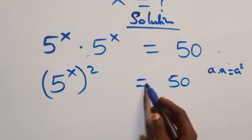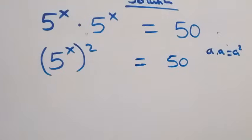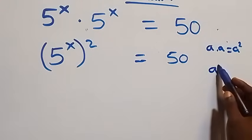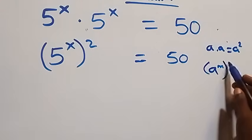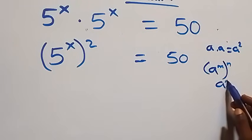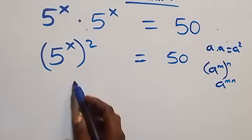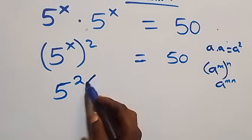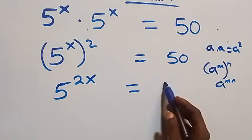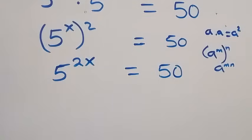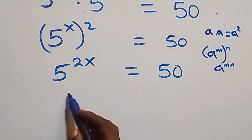This follows the rule: when we have a raised to power m, raised to power n, which is the same as a raised to power m·n, the powers multiply. So we have 5 raised to power 2x equals 50.